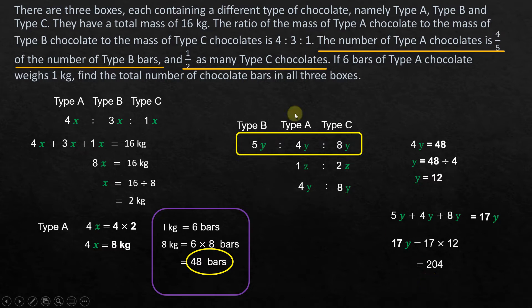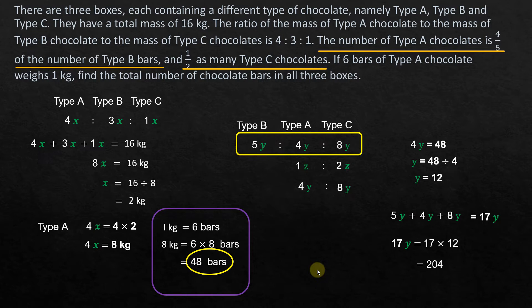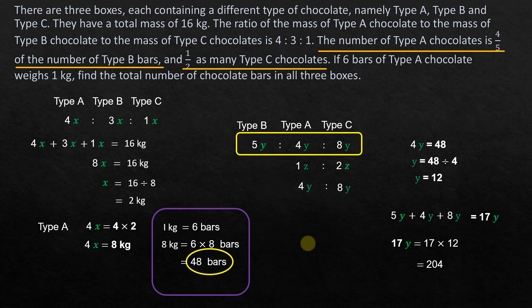So there are a total of 204 chocolate bars in all three boxes. I hope this was interesting and clear. If you have doubts, please comment and I will try to get back to you. Have a great day, happy learning, bye!